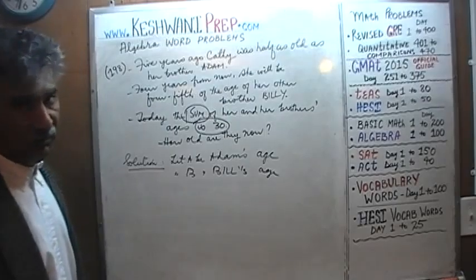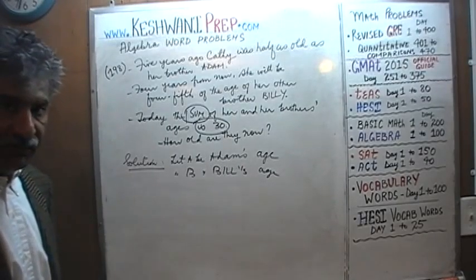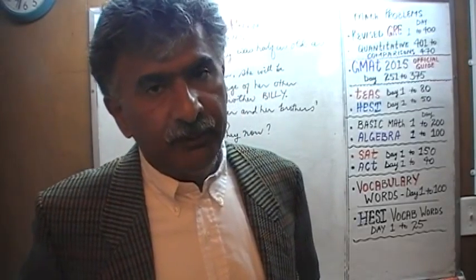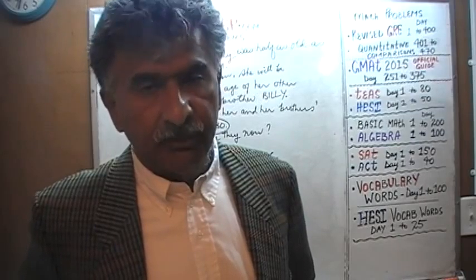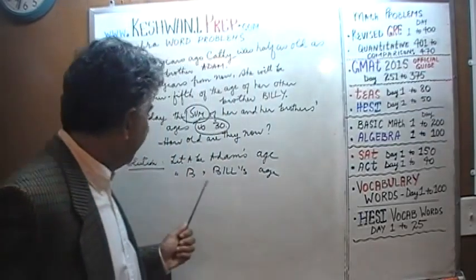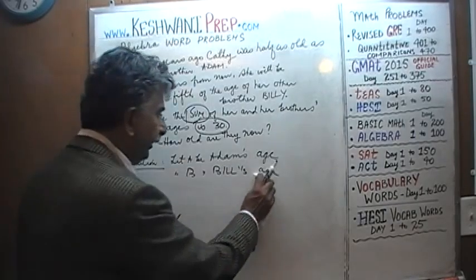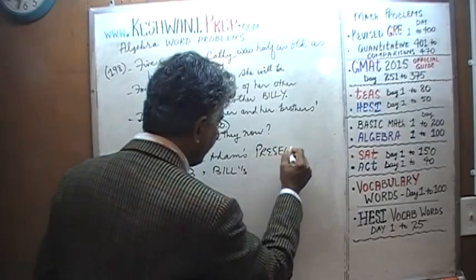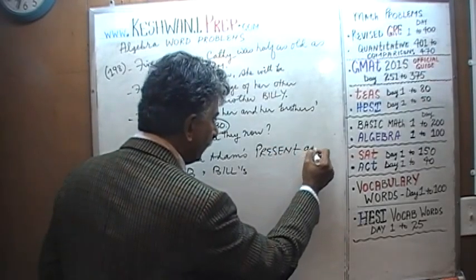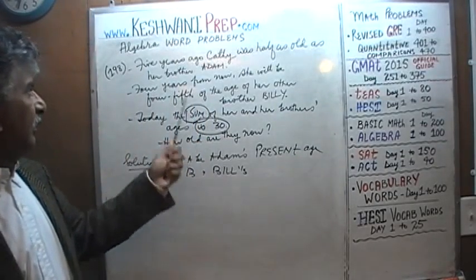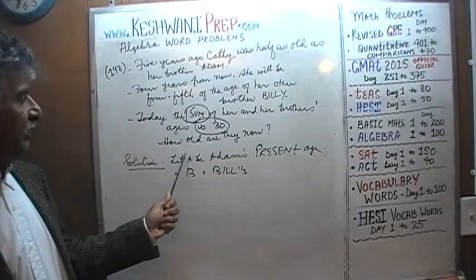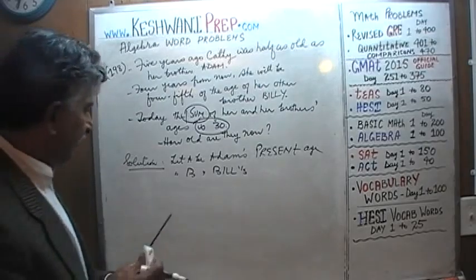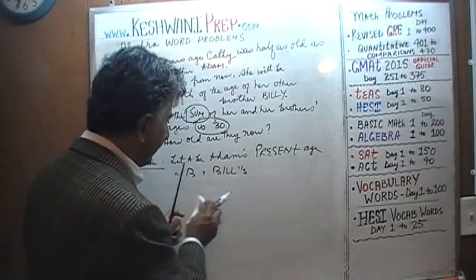Simply saying 'let A be Adam's age' without specifying the time period is not sufficient, because we are dealing with more than one time period. We have to say A represents Adam's present age. We could have used A for his age five years ago or four years from now, but it is more straightforward to use present age. Similarly, B represents Billy's present age.